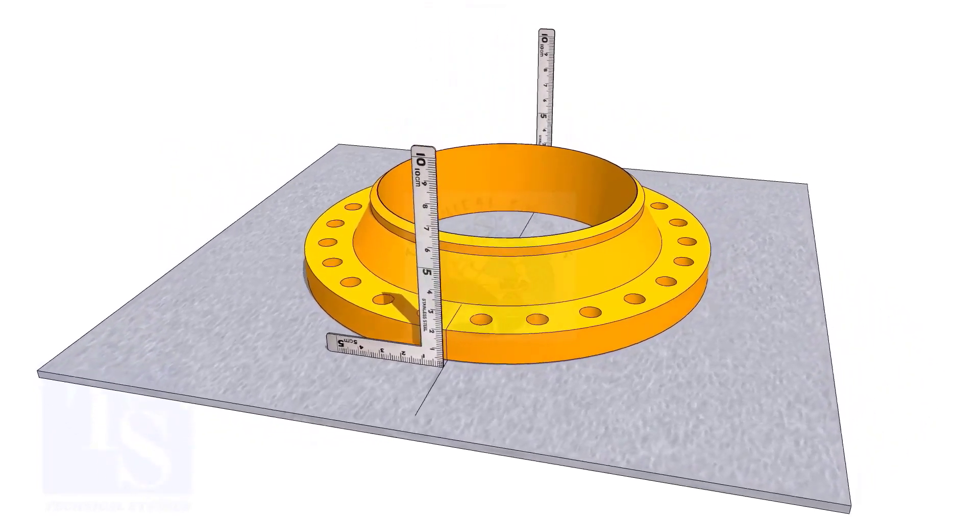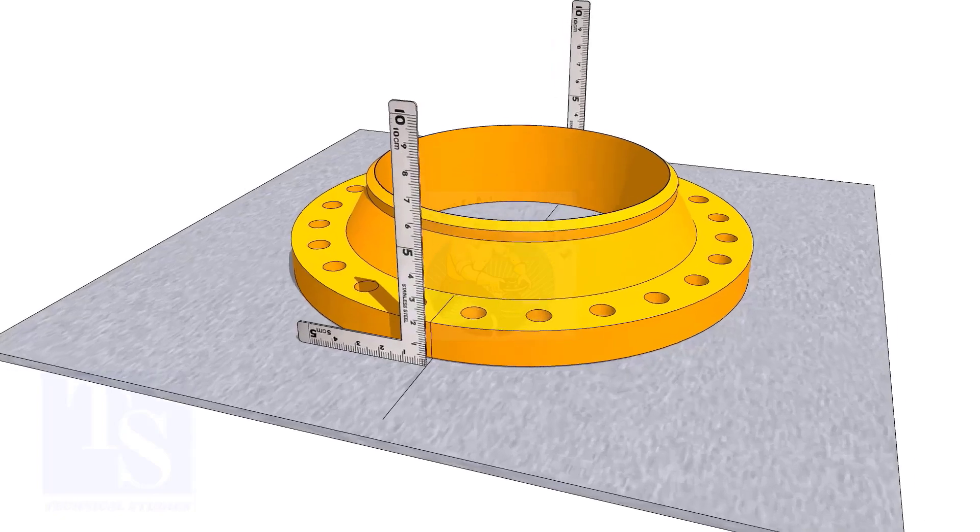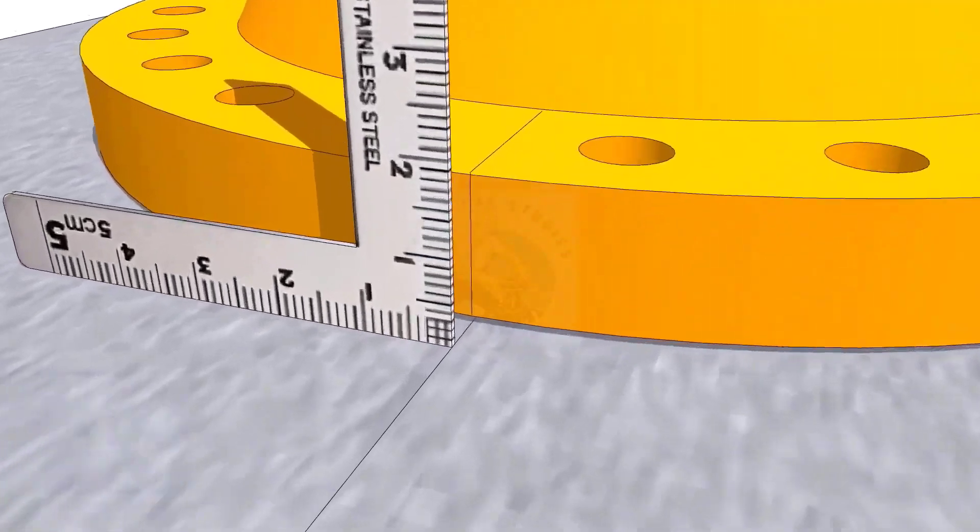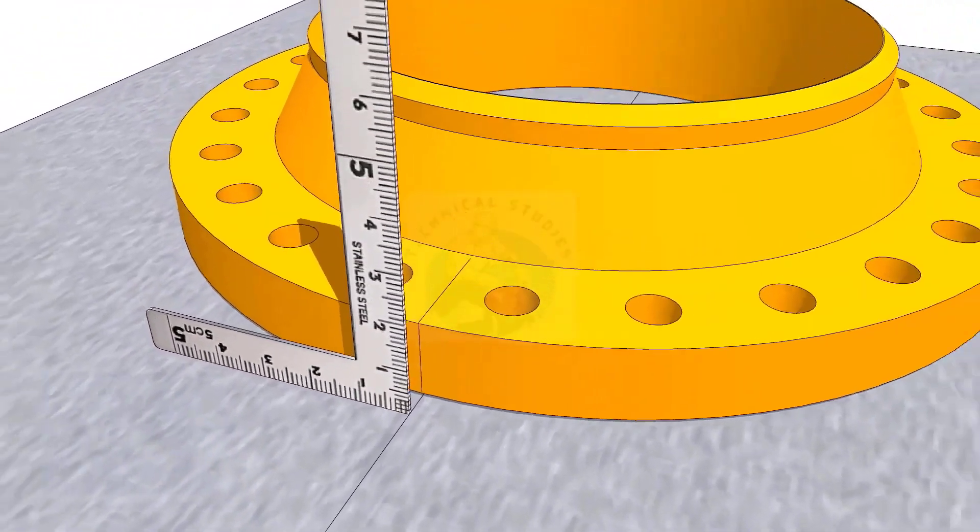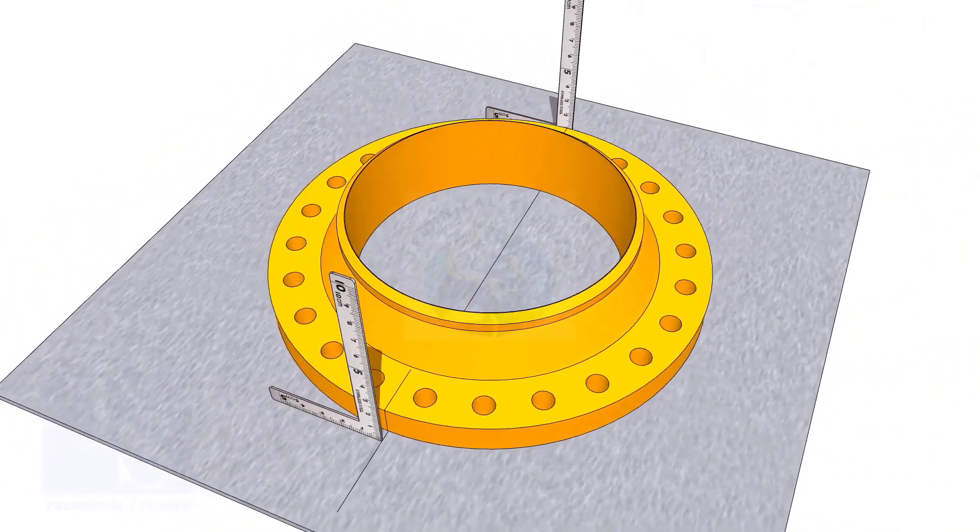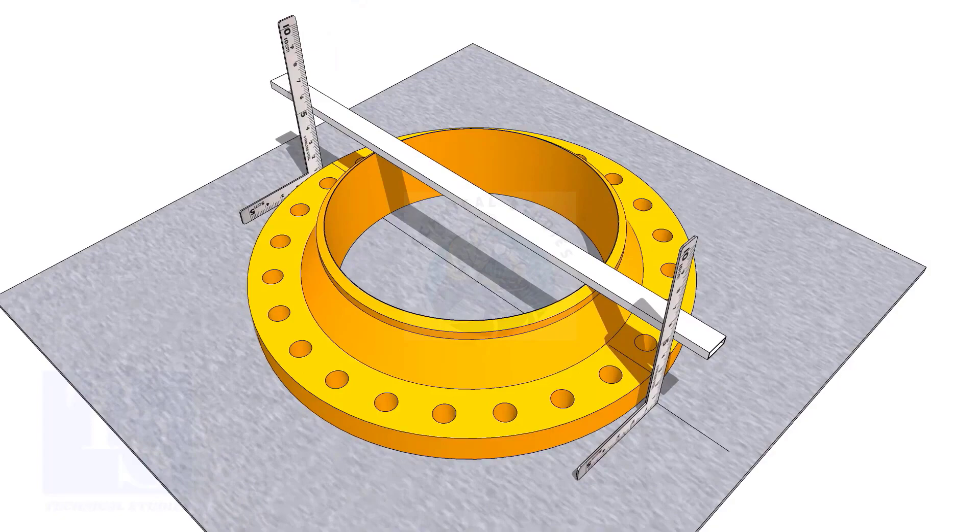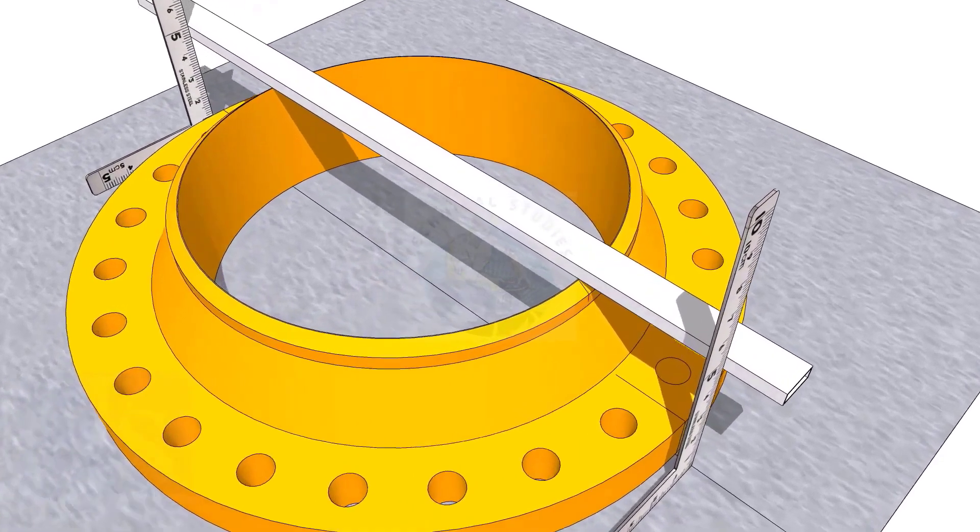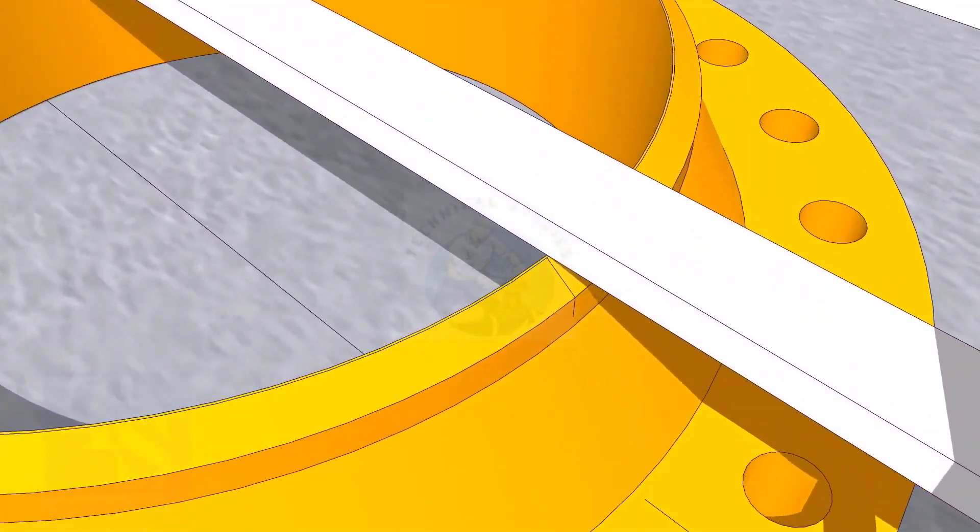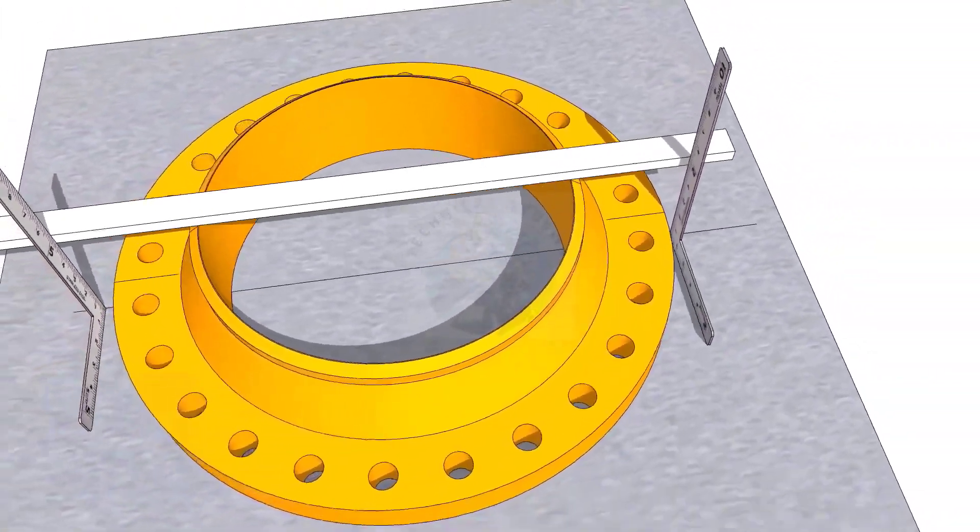Put right angles on the plate and exactly on the line. Transfer the center line on the top of the flange. Remember, this is one of the right methods for marking the center line of a flange.